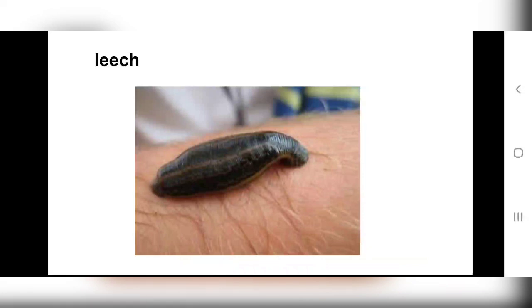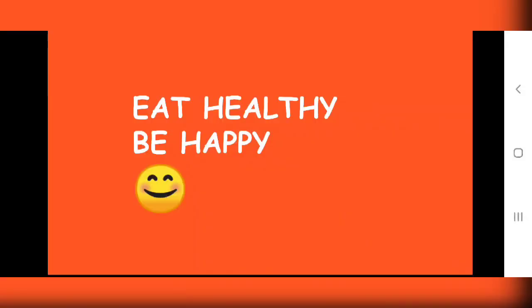So what we have learned today is that animals eat their food in different ways. First, some animals swallow their food; some animals chew the cud; some animals tear their food; some animals gnaw their food; and some animals suck their food. Every living thing has a different way of eating — but what you have to do is eat healthy and be happy. Thank you everybody, have a nice day, see you, bye bye.